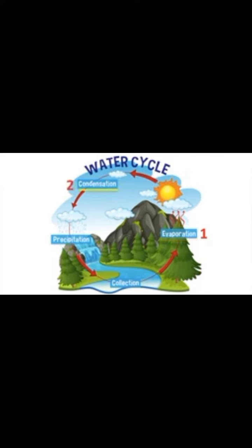Next, condensation takes place. This is when the water vapour in the air cools down. It changes into small drops of water. This forms clouds. Clouds consist of millions of droplets of water.